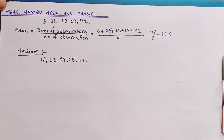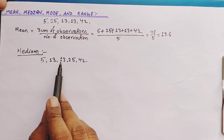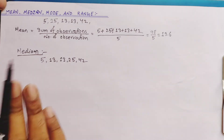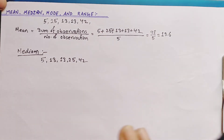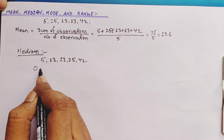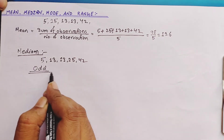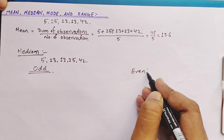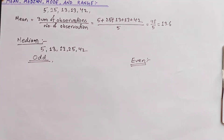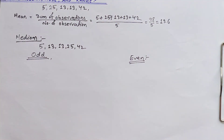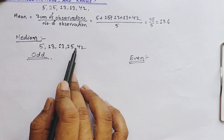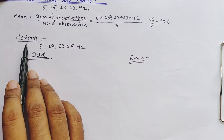Now after arranging, we count the number of observations. We already know it is 5. Here come two cases: when the number of observations is odd, and when it is even. Most students make the blunder mistake of forgetting to rewrite the observations in ascending order before calculating the median. I hope you will not repeat this mistake after watching this video.